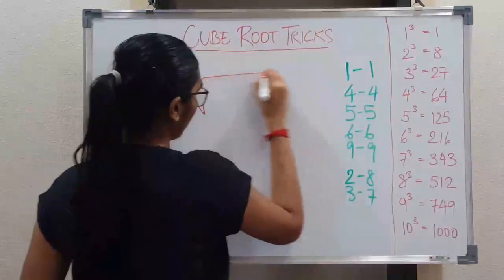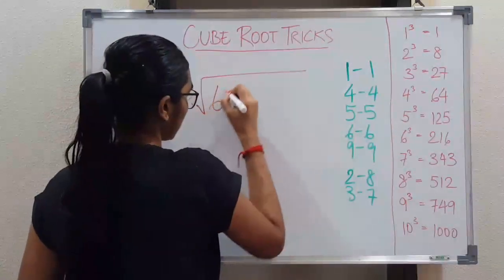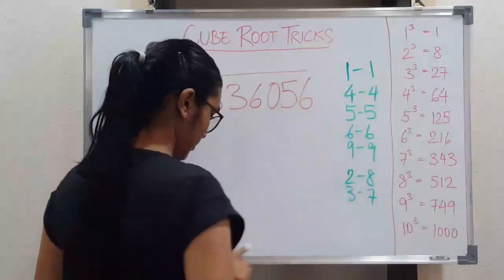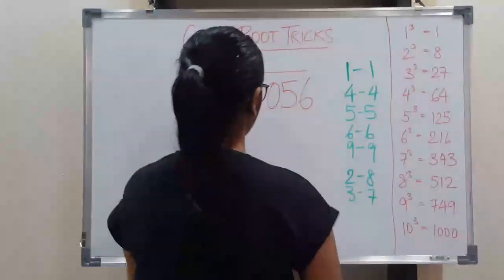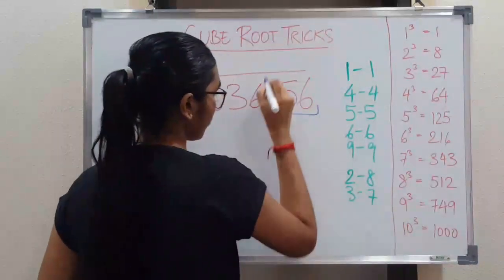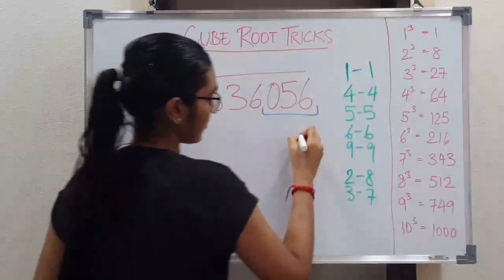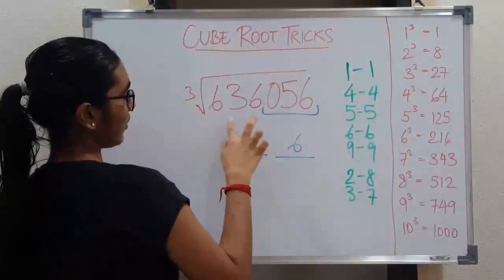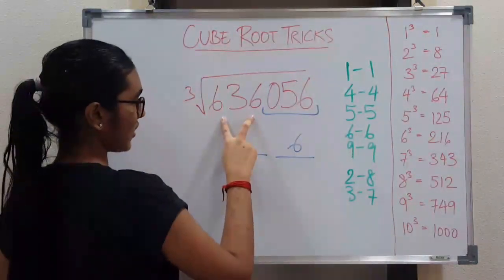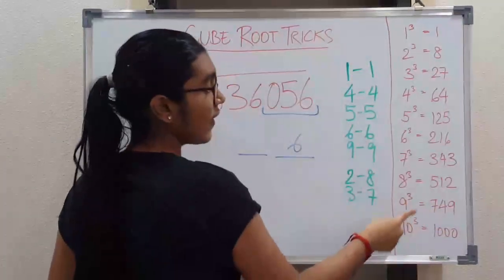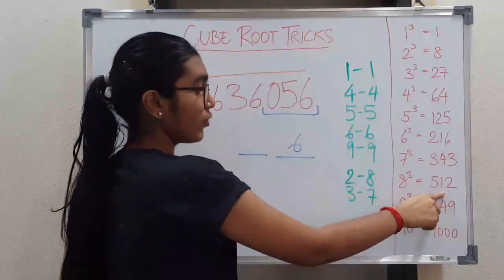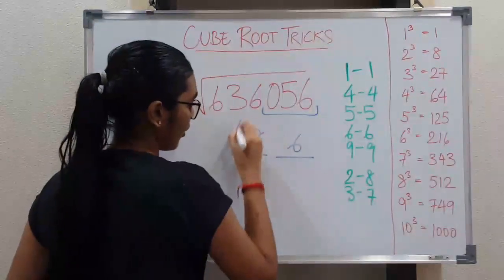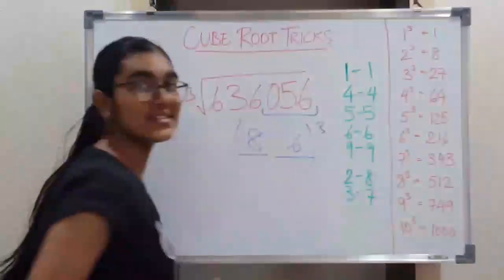So here we take the number 636056. First we take these three numbers into one bracket. Now 6 ends at 6 itself. Now we take the number 636 into consideration. From here you can see that the perfect cube number before that is 512 and it is the cube of 8. So here 86 is the answer.